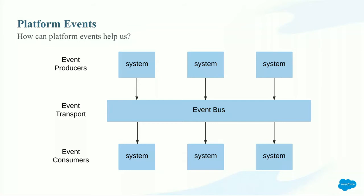In an event-driven architecture, we have event producers, then we have the event bus. An event producer creates an event, and that event gets put onto the event bus. The event bus is basically a queue - it has a strict order, it's chronological, and it gets executed one event after the next. Then we have event consumers. You subscribe to an event, and the moment that event gets created and published onto the event bus, the event consumer gets notified and receives that event and all the information it holds. The event consumer doesn't really need to know about the event producer - all it needs to know is the event.